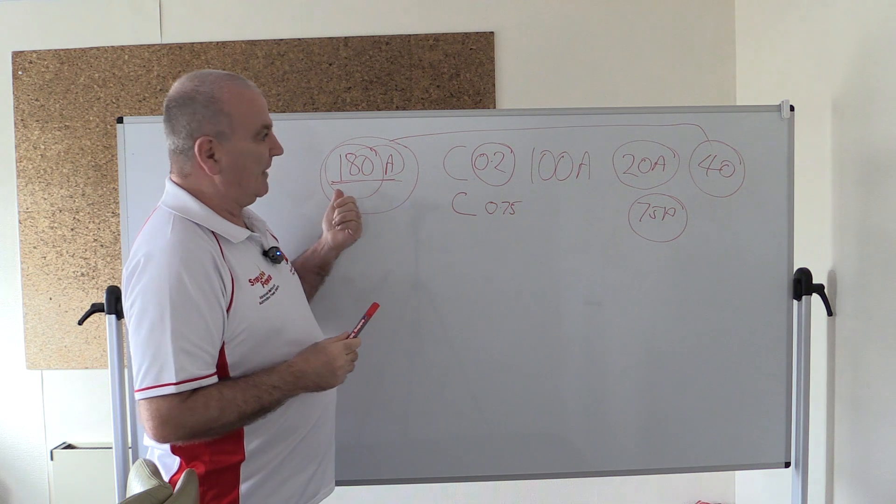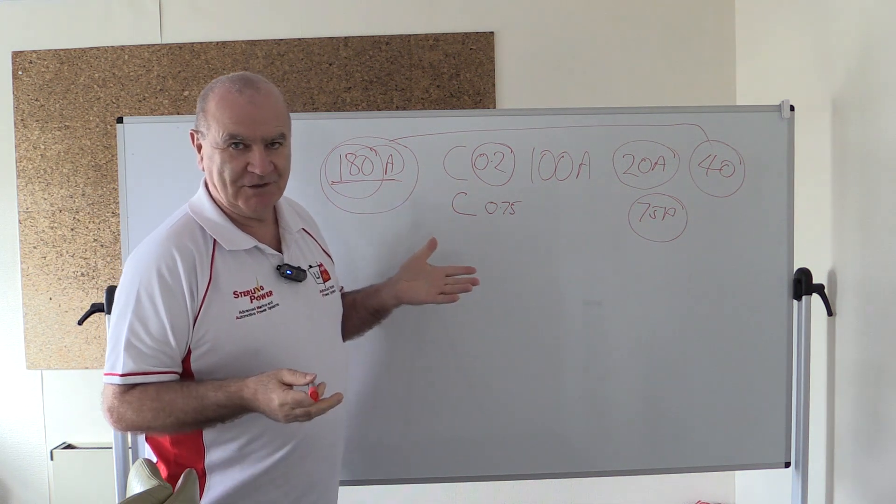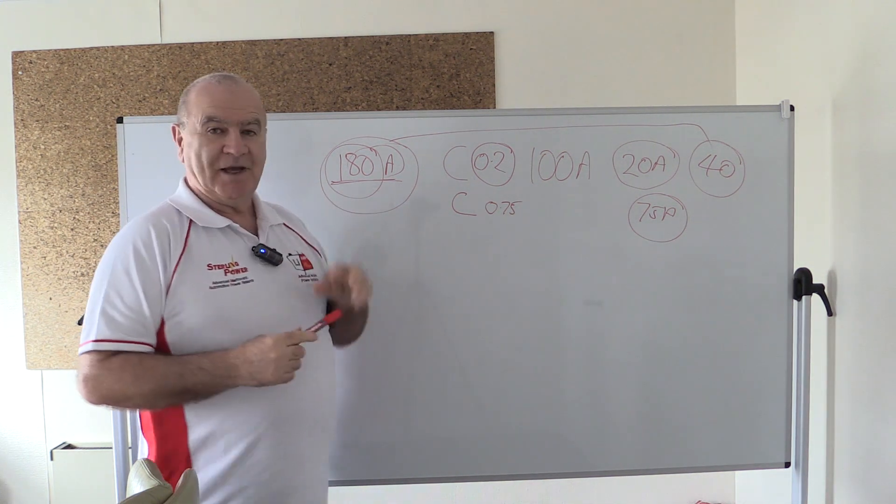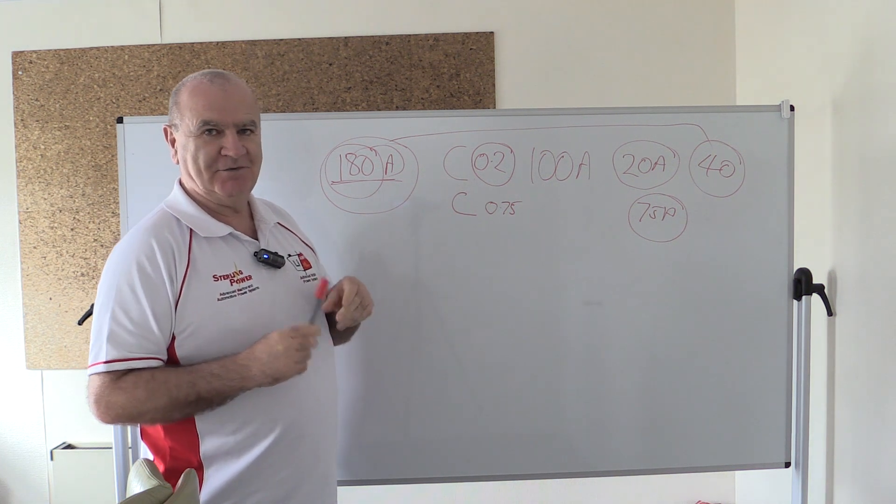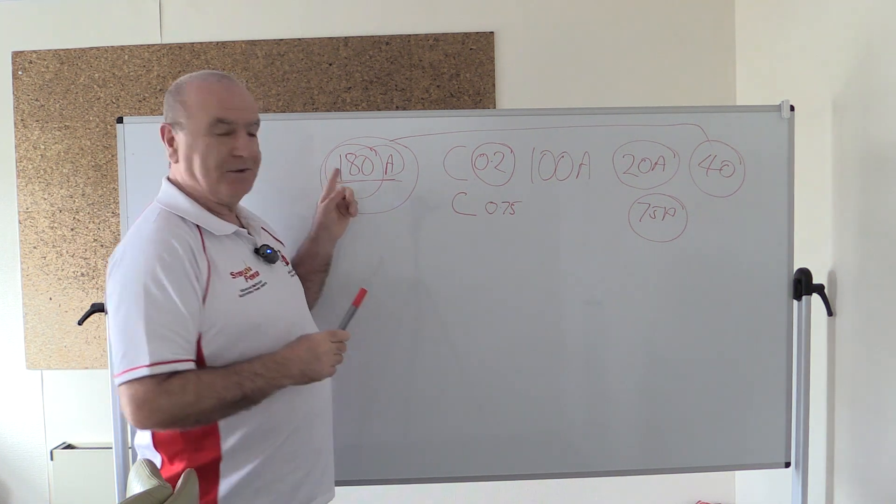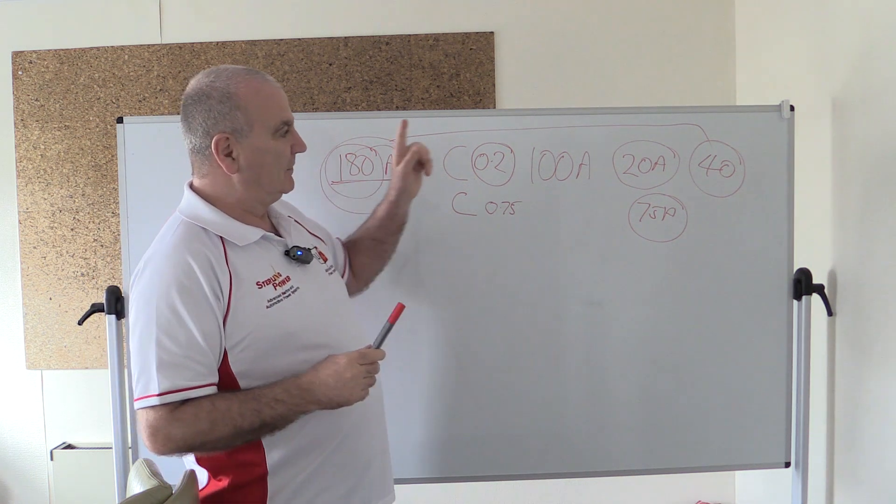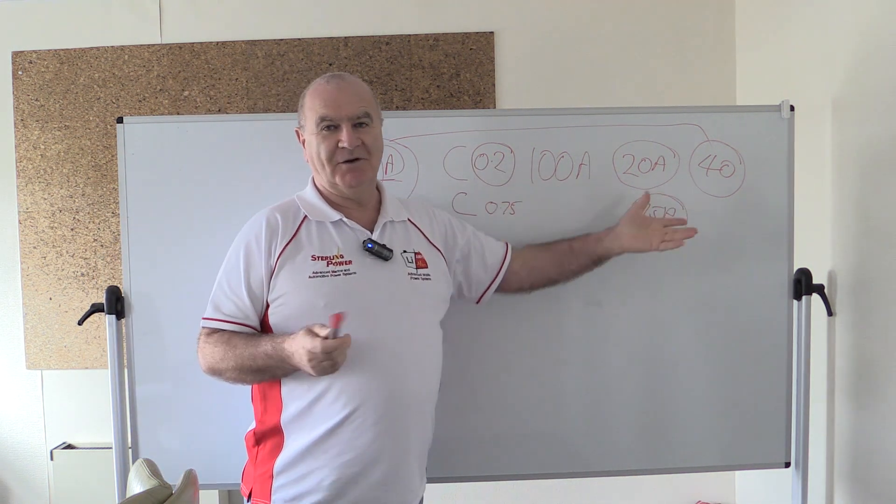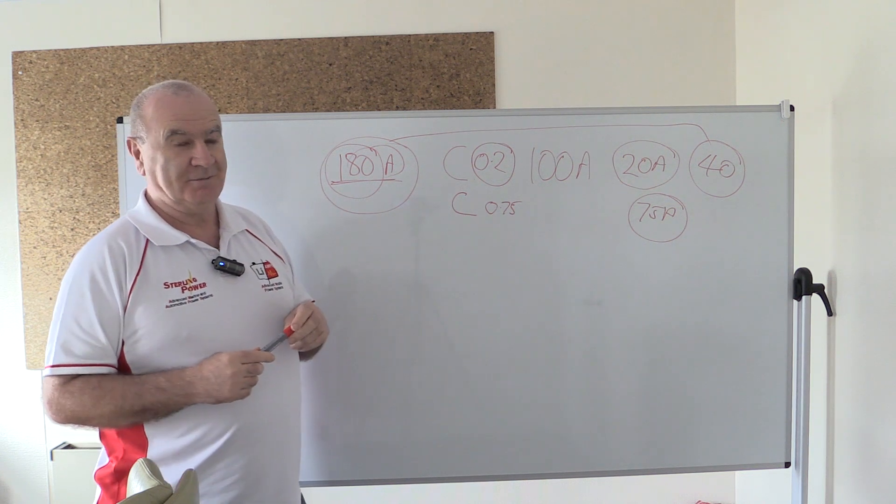Now, you may be quite happy to put on a 40 amp battery to battery charger and charge those batteries at 40 amps. Personally, in my opinion, that makes you a bit of an idiot. If I had a 180 amp alternator, I would want to be charging my batteries at around 160 amps, not at 40 amps.